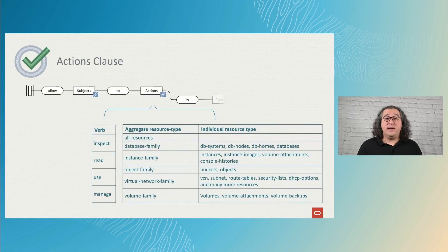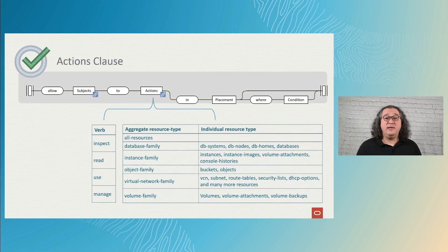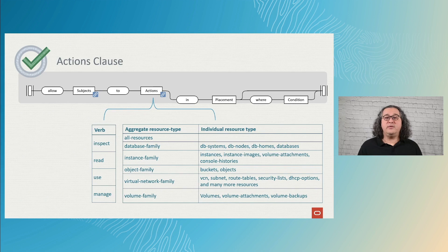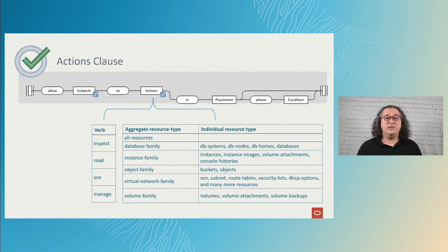The objects paired with the action clause can be specified as a family aggregator or by the individual service names. Once the action is set, the placement clause will define the location of the resource that the user can manage. With 'where' and condition clauses, policies can narrow conditions to grant permissions more specifically. In the next slides, we'll show some examples of placement and conditions.